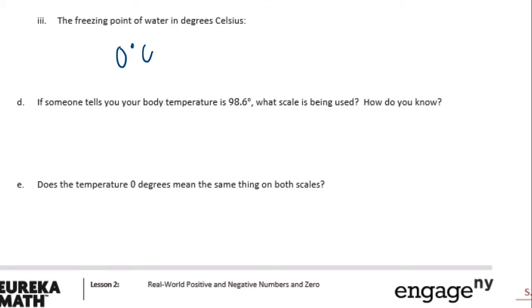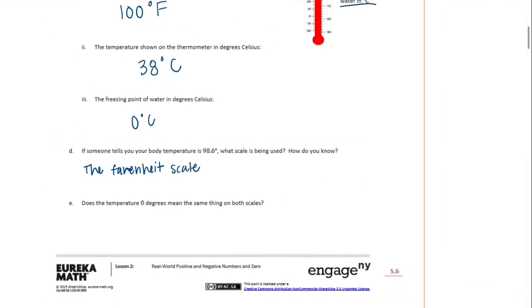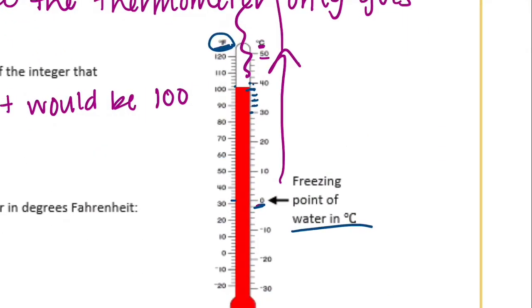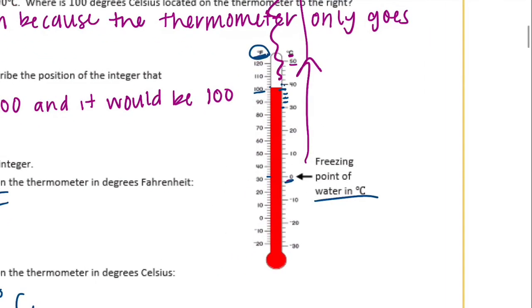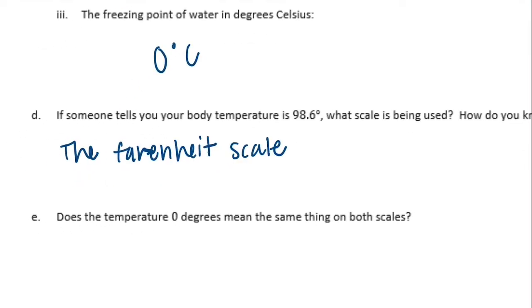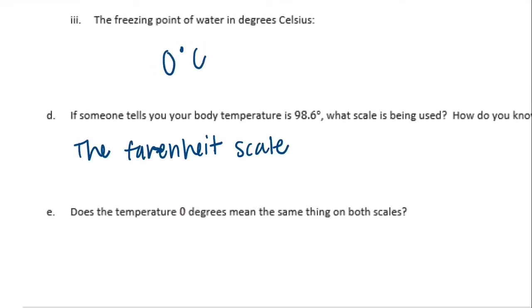Part D: if someone tells you your body temperature is 98.6 degrees, what scale is being used? So if your body temperature is 98.6, then we would be using the Fahrenheit scale. And we know this because water boils at 100 degrees up here, at 100 degrees Celsius, water boils. So, I mean, we're not boiling, right? If we were 100 degrees Celsius, it's not really possible. And so we can say water boils and we would not survive at that temperature.